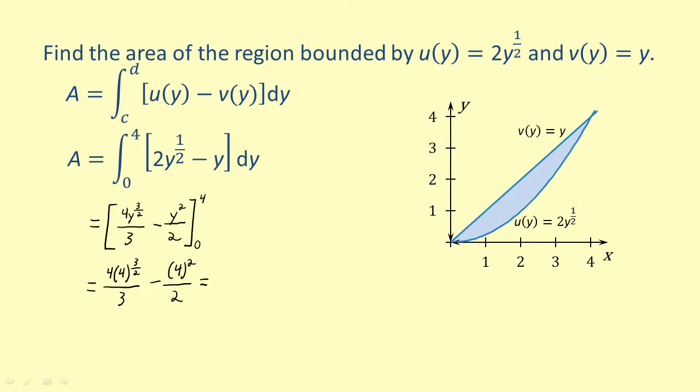Now simplifying, we get 32 over 3 minus 8. And then subtracting, we get 8 over 3.